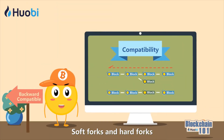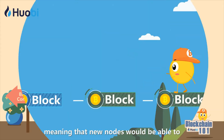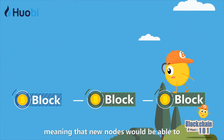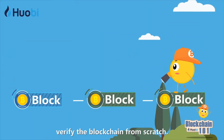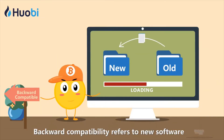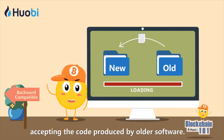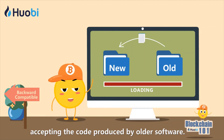Soft forks and hard forks are backwards compatible, meaning that new nodes would be able to verify the blockchain from scratch. Backward compatibility refers to new software accepting the code produced by older software.